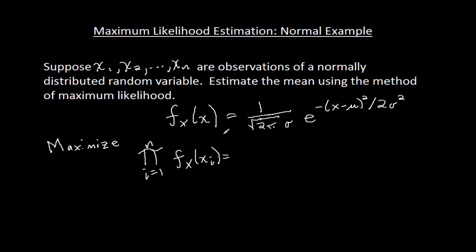Now, in our case, that means we're multiplying all these together. Okay, so I have the product from i equals 1 to n, f sub x. Oh, whoops, I don't want to write f sub x again. I'm going to actually fill in this formula. 1 over the square root of 2 pi sigma times e to the negative xi minus mu squared over 2 sigma squared.